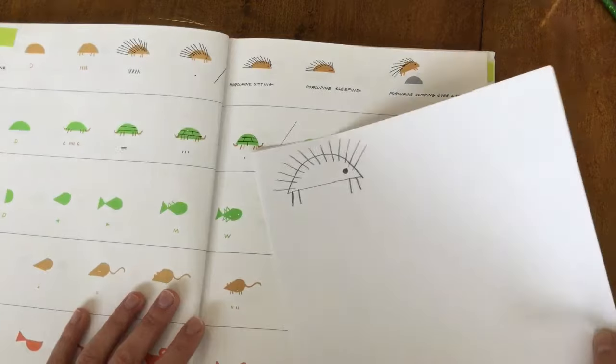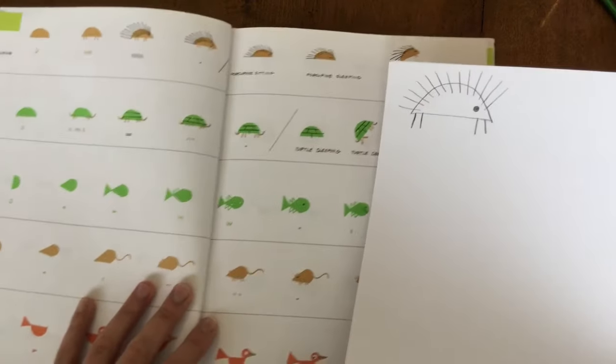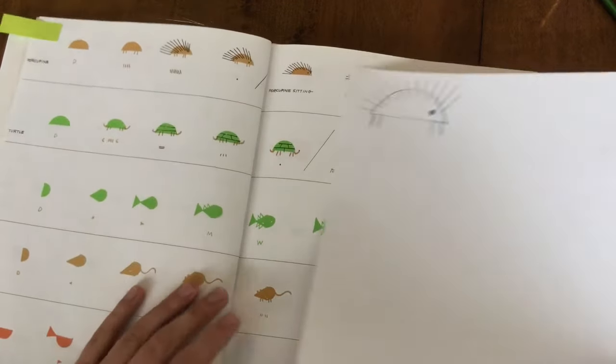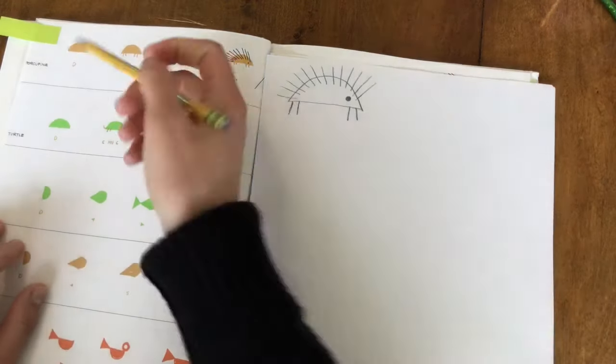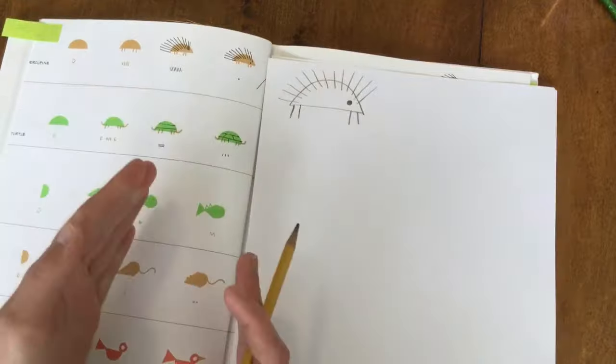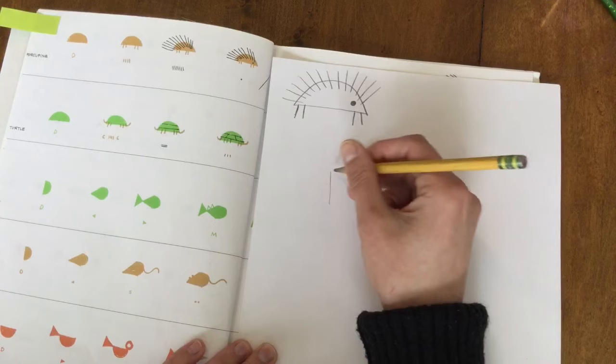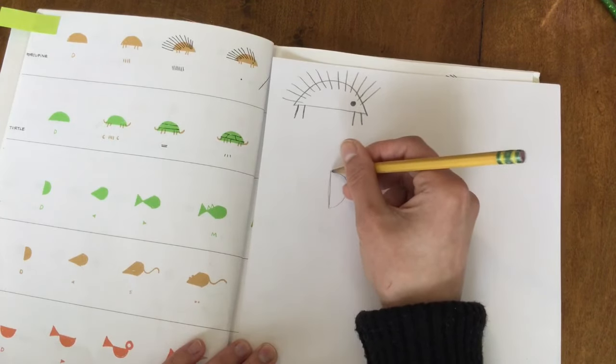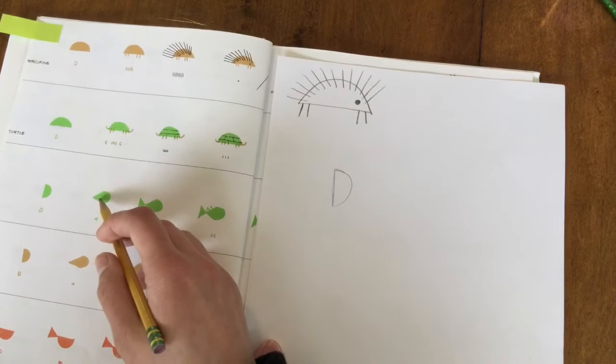The next one I'm going to draw for today is the fish. I like the fish because it's also really simple. The first thing we're going to do is draw the fish's body. It's the same as the porcupine, just a little skinnier and on its side. So we're going to draw a semicircle on its side. Again, if you want to color these in as you go you can do that if you want to be inspired to color them while working.